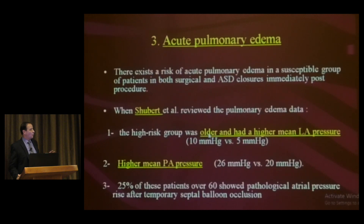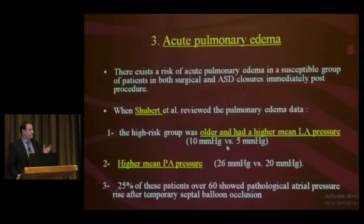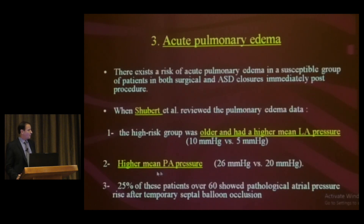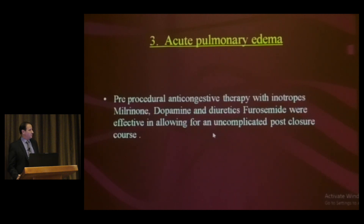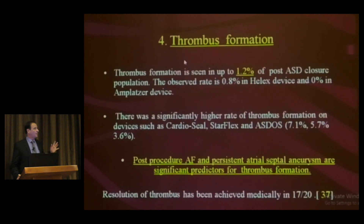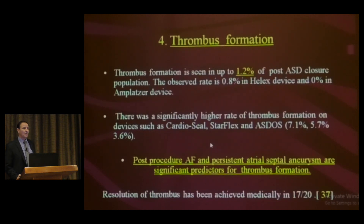Third complication: acute pulmonary edema. The high-risk group was older with higher mean left atrial pressure. The message is: before closing any ASD defect in an adult, always perform hemodynamics. If left atrial pressure and pulmonary capillary wedge pressure are elevated, do not close the defect. Some authors start pre-procedural anti-congestive therapy with inotropes, dobutamine, dopamine, and diuretics before planning for closure.